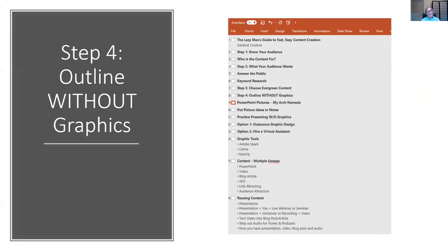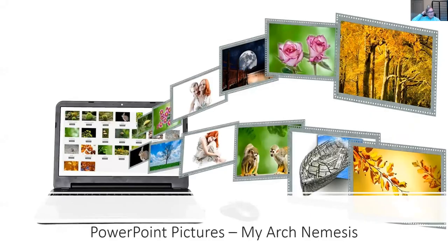My next step is to outline without graphics. I use the outline view in PowerPoint — found in pretty well every version — and I just drop in text bullet points, the information I want. I can drag it around, move it, reorder it — all without pictures. I refuse to think about pictures at this stage. PowerPoint pictures are my arch nemesis. It's so easy to go find a picture and then spend an hour going through stock photos, only finishing one slide.